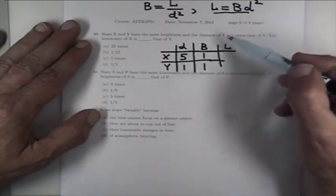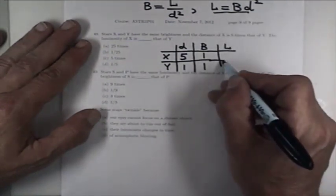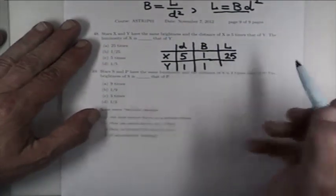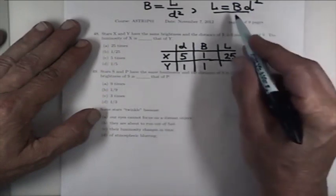For X, I have five squared is 25 times one, the luminosity is 25 in some units. For star Y, B is one, D is one, and B times D squared is one. Then I conclude that X must be 25 times more luminous than Y if it is to appear equally bright, being five times more distant than Y. The answer here is A.